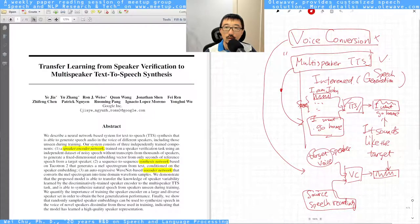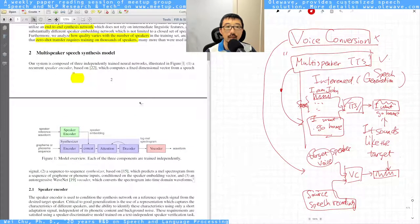The authors leveraged Tacotron in their synthesizer and WaveNet in their vocoder, and they proposed a speaker encoder trained with 18,000 speaker data collected in-house.